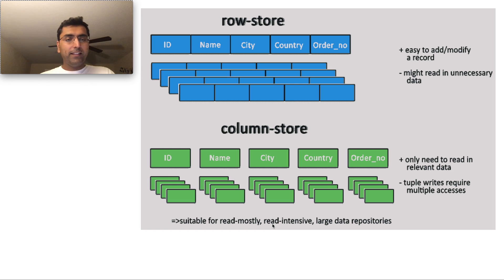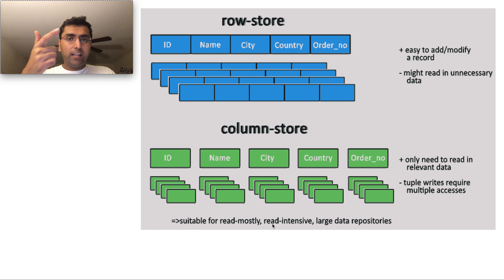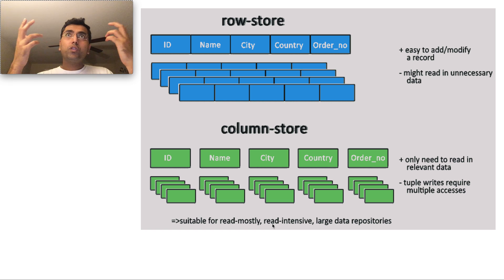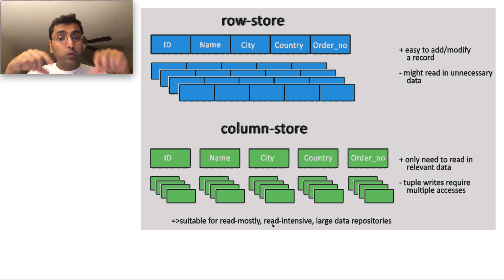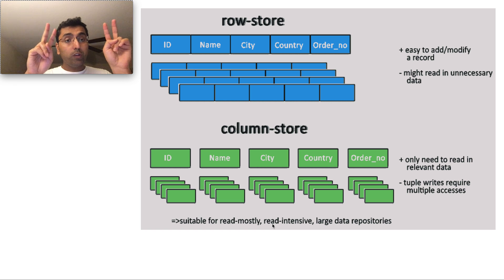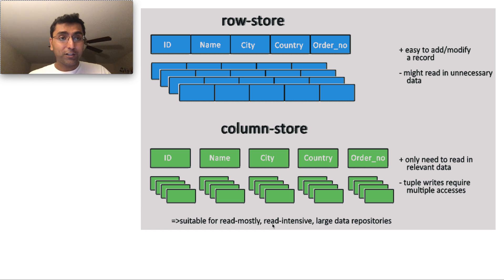OLTP is a row-based system where it stores the entire set of related entities together. For example, if you have an order, it could be the ID of the order, the name, the city where the order was placed, the country, and the order number — all stored together. Typically, when a customer puts in an order, this entry gets created. A use case for a column store is where you want to find all the orders placed in a city. All you need is order IDs and the city — you don't need all the names, the country, or order numbers.